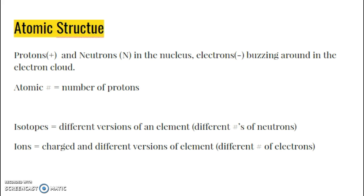A lot of this chapter is going to be review of things that you learned in Chem 1. Atomic structure is huge in chemistry, so hopefully you're comfortable with this if you've had chemistry. If you haven't, then you might have to play a bit of catch-up. We know that protons and neutrons are in the nucleus, and the electrons buzz around in the electron cloud. The atomic number is the number of protons. You can't change the number of protons without changing the element. You can change the number of neutrons, which gives you a different version of that element called an isotope.